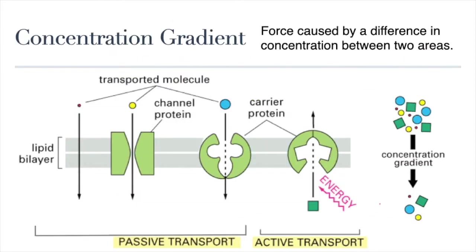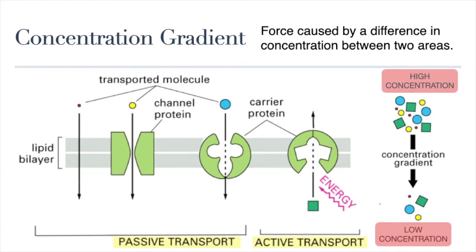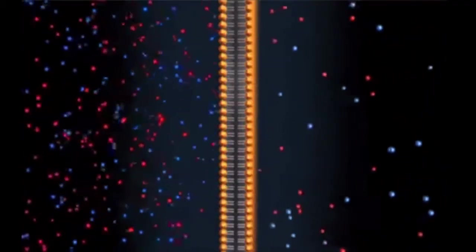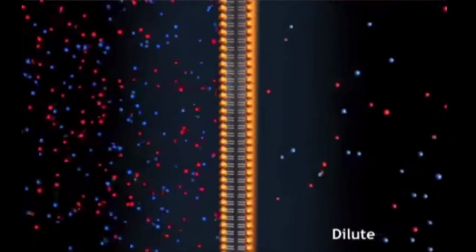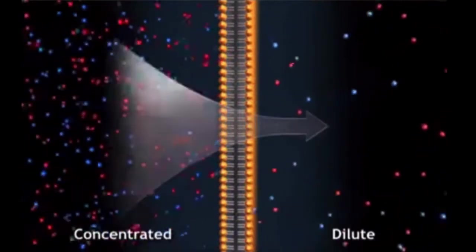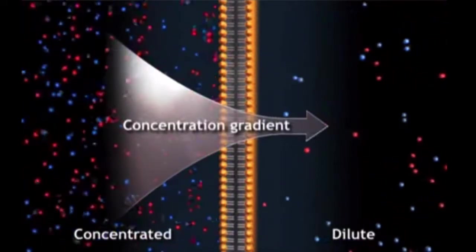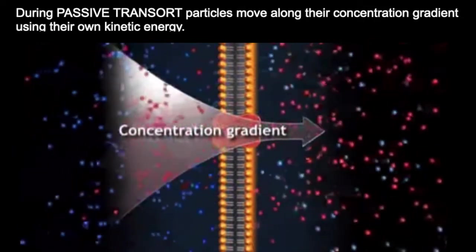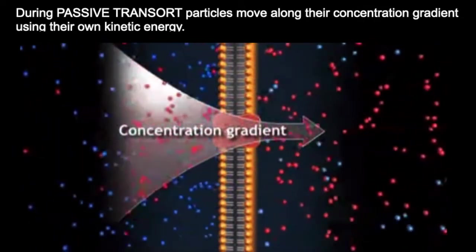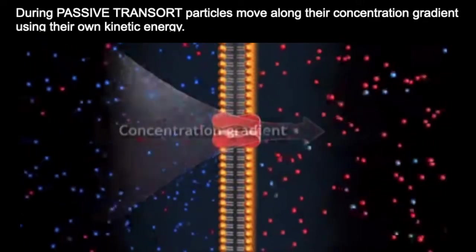The concentration gradient is the force caused by the difference in the concentration of a substance between two areas. It happens when there is an area with a high concentration of a substance and another area with a lower concentration of the same substance. In an organism, a concentration gradient is established when there is a low concentration of a specific substance on one side of a membrane and a high concentration of the same substance on the other side. During passive transport, particles move along their concentration gradient from an area of high concentration to an area of lower concentration, using their own kinetic energy.